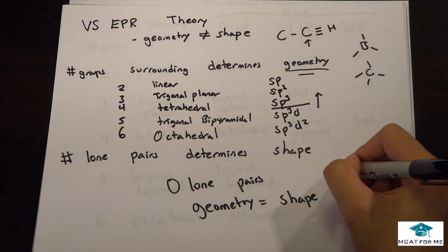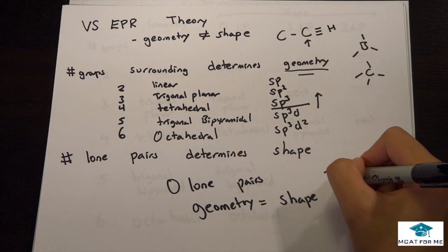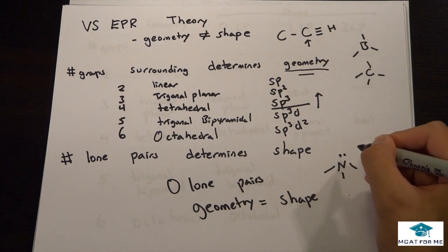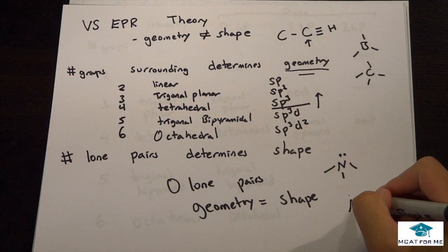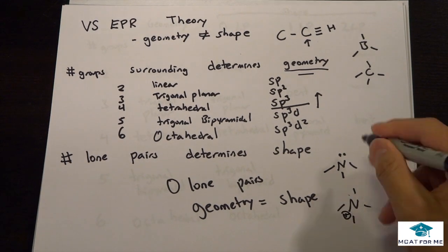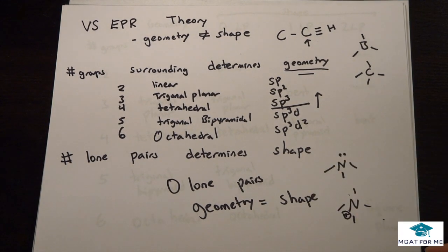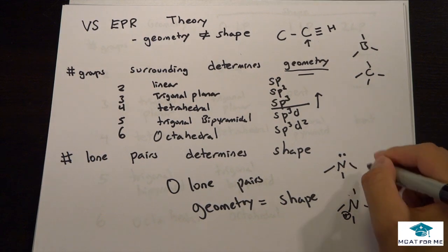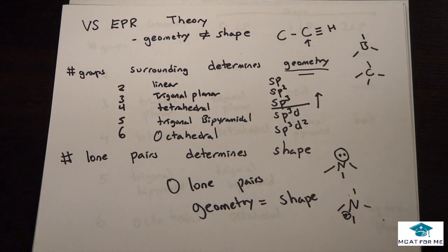For example, so we have a lone pair like this versus something when we had it like that. These are going to have the same geometry but different shape.